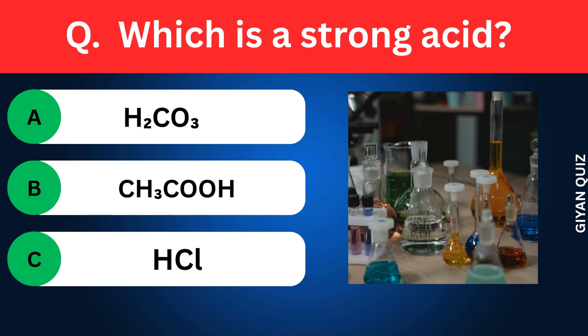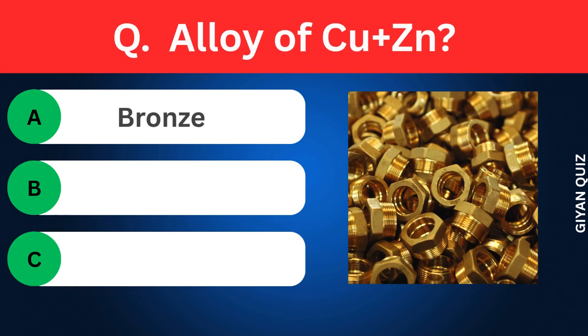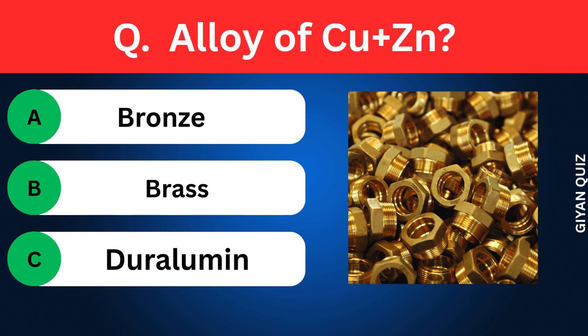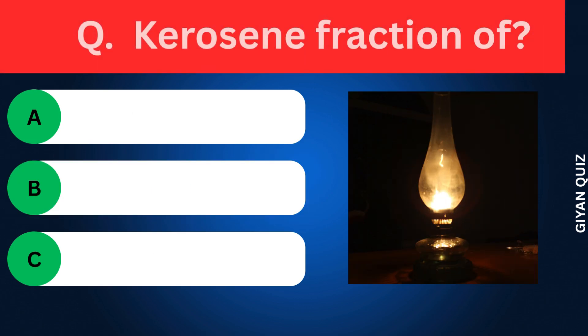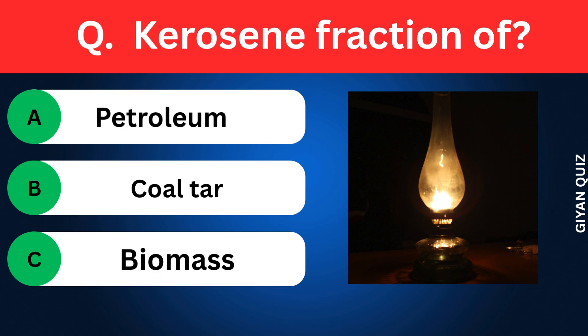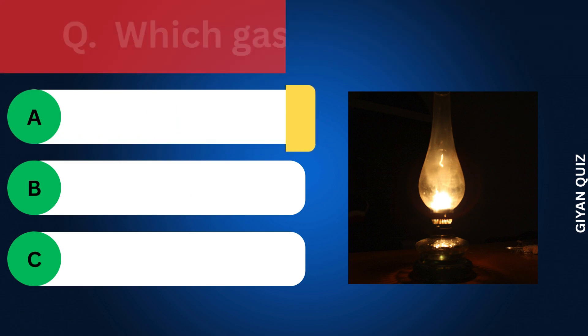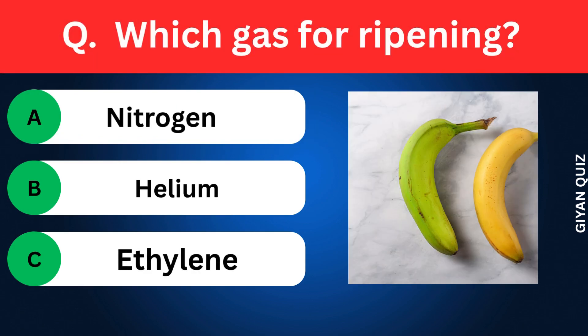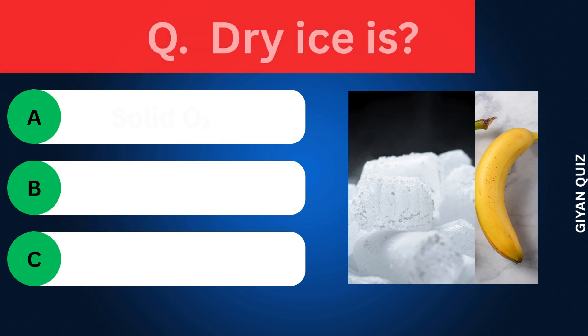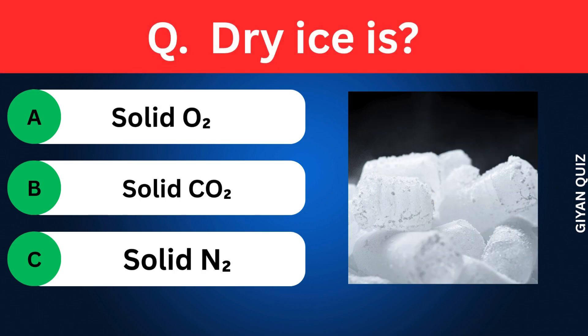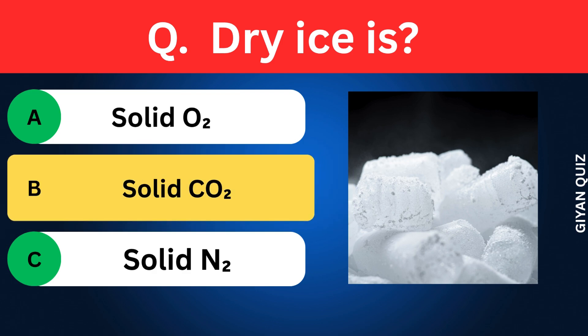Which is a strong acid? Options: Carbonic acid, Acetic acid, Hydrochloric acid. Correct answer: hydrochloric acid. Alloy of copper and zinc? Options: Bronze, Brass, Duralumin. Correct answer: brass. Kerosene is a fraction of? Options: Coal tar, Petroleum, Biomass. Correct answer: petroleum. Which gas is used for ripening? Options: Nitrogen, Helium, Ethylene. Correct answer: ethylene.